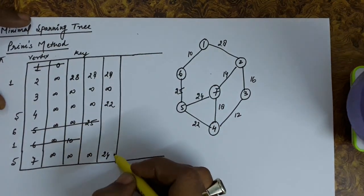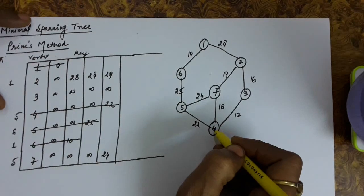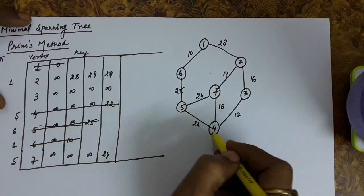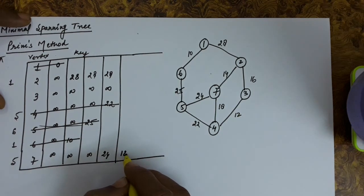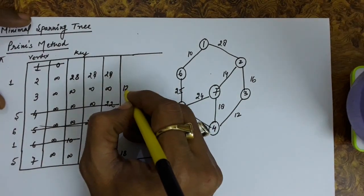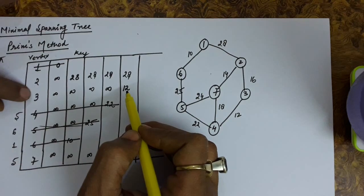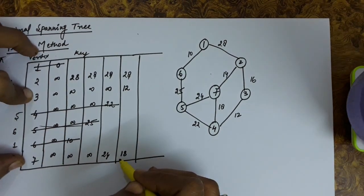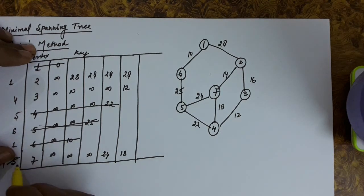Out of the remaining vertices, the smallest key is 22, so vertex 4 is deleted. From vertex 4: vertex 5 is already deleted. To vertex 7, the edge cost is 18, which is less than 7's current key value of 24, so we update the key of 7 to 18. From 4 to 3, the cost is 12, so we set key of 3 as 12. The predecessor of 3 is set to 4, and since 7's key was updated, its predecessor changes from 5 to 4.